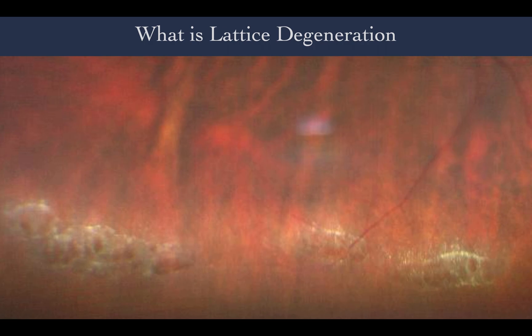The long-term chance of retinal detachment in patients with lattice degeneration is about 0.5 to 1%, and this information is very important so you can inform your patients. On the other hand, around one-third of patients with rhegmatogenous retinal detachment may have concomitant lattice degeneration.